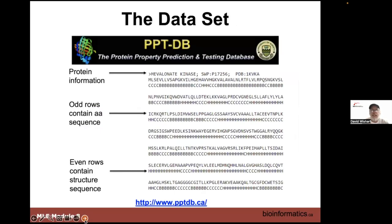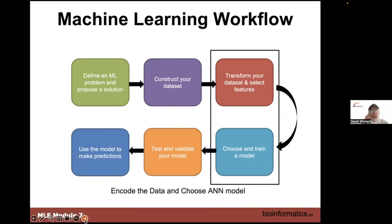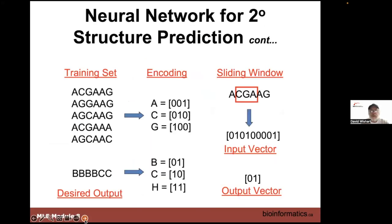As we did before, when we constructed the dataset we used the Protein Property Prediction and Testing Database, or PPTDB. It's been around for a while and hasn't been updated for a long time, but it still has thousands of protein sequences with their secondary structures annotated. The same dataset used in the original pure Python implementation is used here. We know we're using an artificial neural net, and we also know we have to do some encoding.